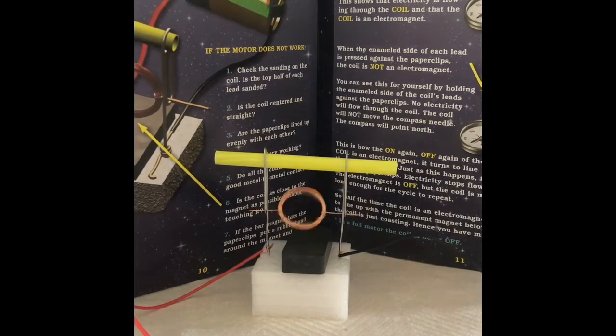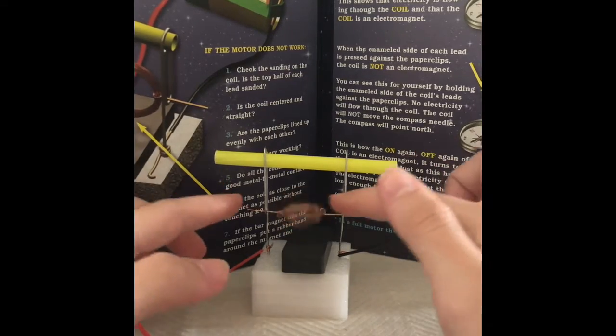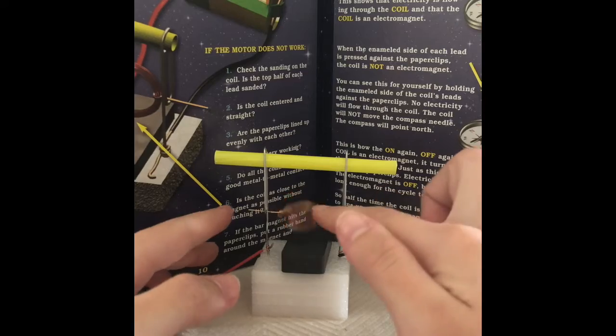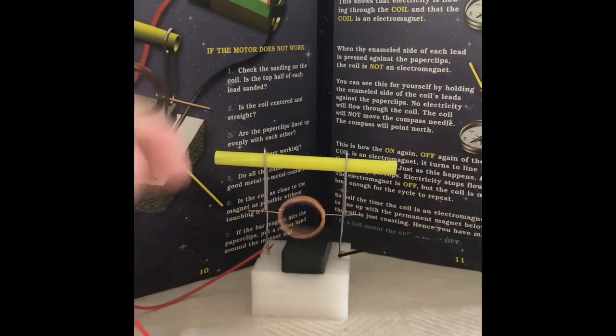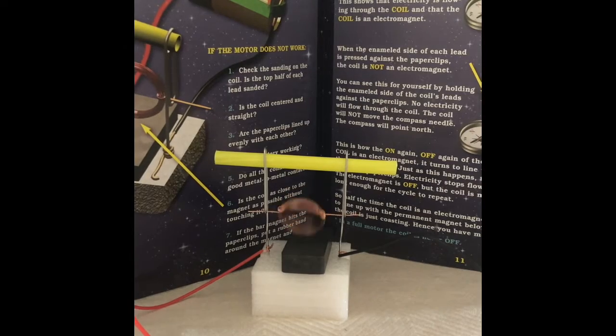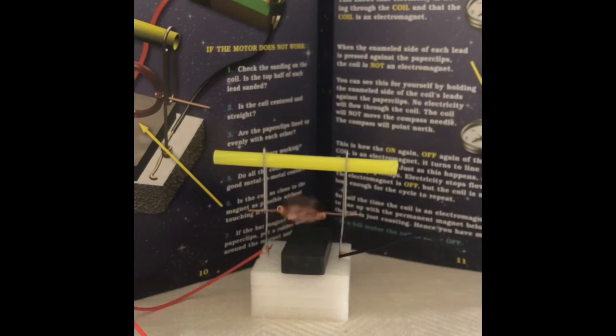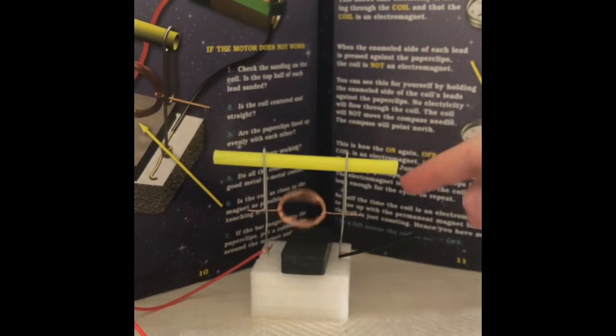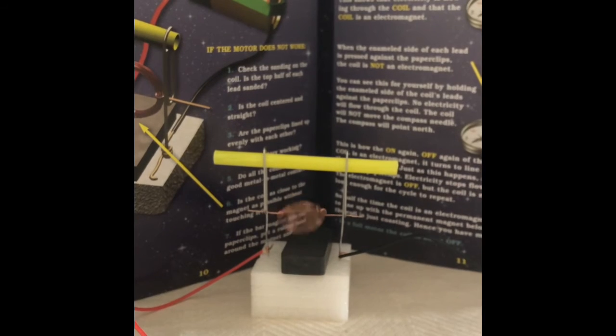This is for the reason being that electricity needs to go through a conductor. The coil no longer becomes a conductor once the paper clips come into contact with the non-sanded side.